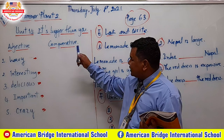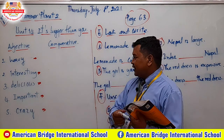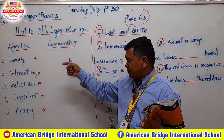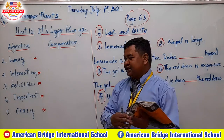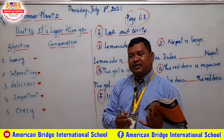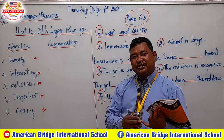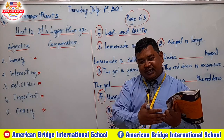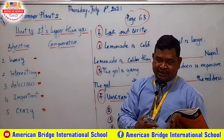So this is Unit 14 — 'It is bigger than you.' I will explain more about numbers one to five, related to one-syllable adjectives, two-syllable adjectives, and three or more syllable adjectives.